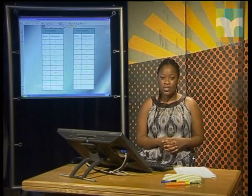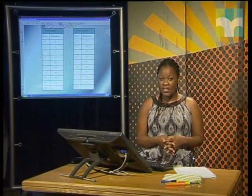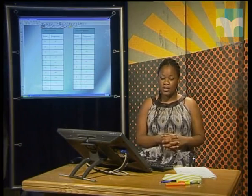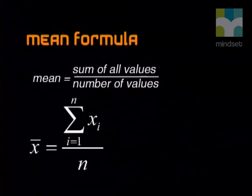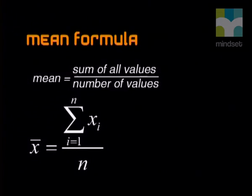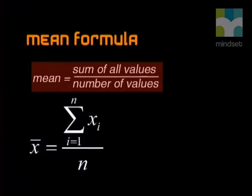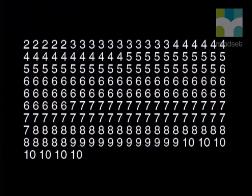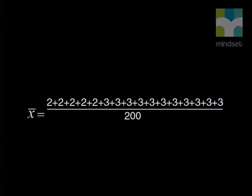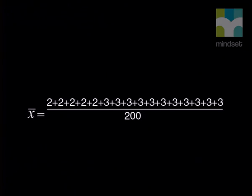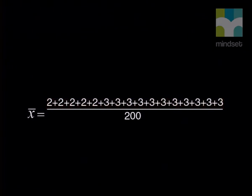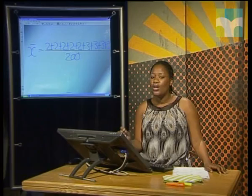Next we need to look at the means for each set, as this gives us the averages and tells us the average feelings of the customers. Remember the mean formula: the mean value is equal to the sum of the results divided by the total number of results. Here is an ordered list of values from our table. Using this formula to find the mean would require adding all the twos, all the threes — it's quite a long calculation.